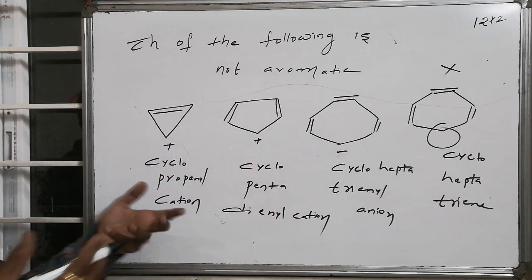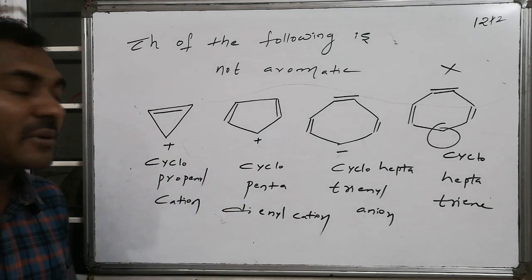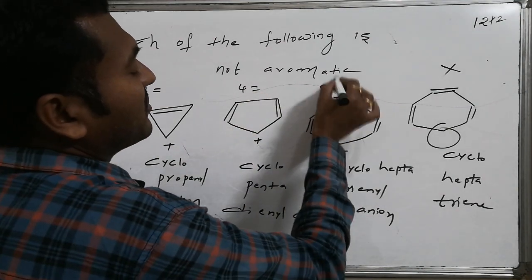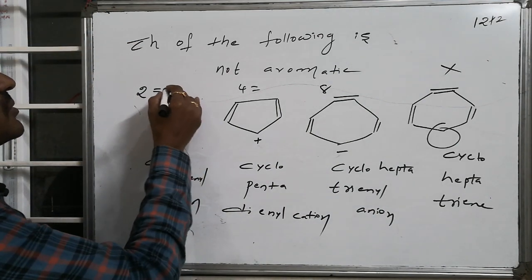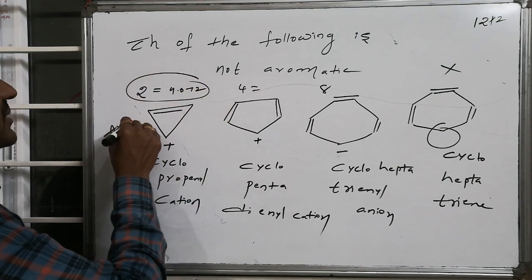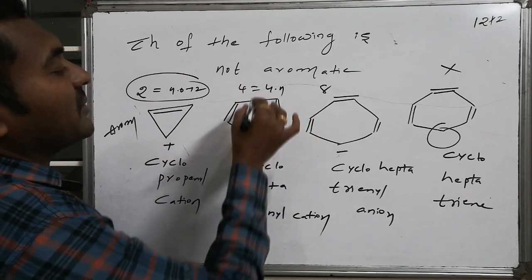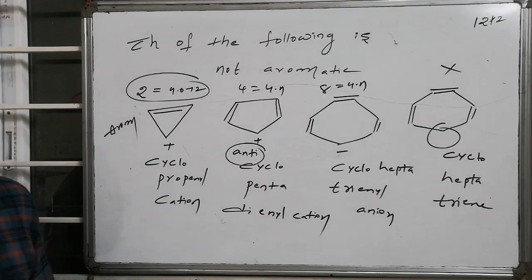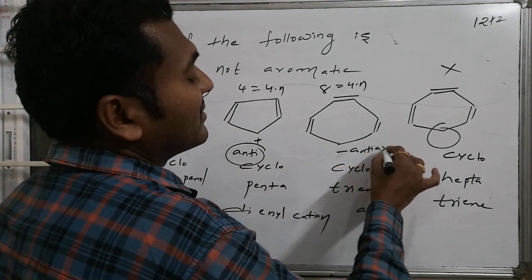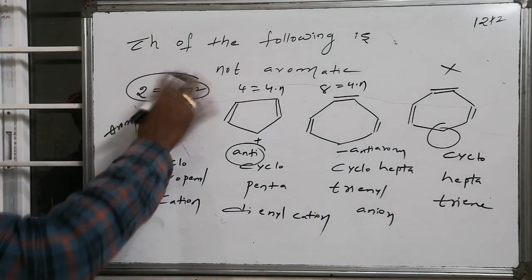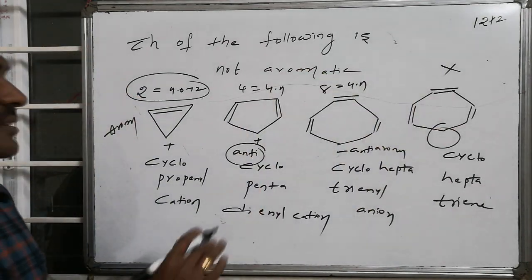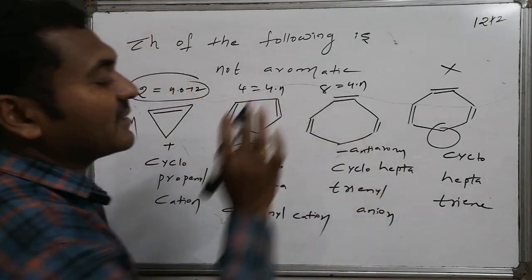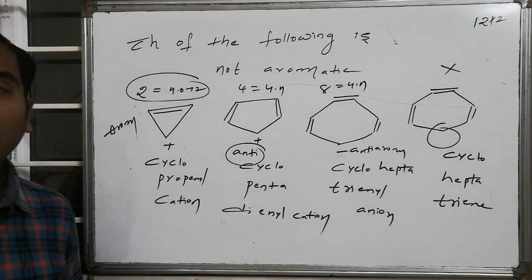The remaining three compounds maintain planarity. Counting pi electrons: cyclopropenyl cation has 2 electrons (4×0 + 2), satisfying Hückel's rule — aromatic. Cyclopentadienyl cation has 4 electrons, which is a multiple of 4n — anti-aromatic. Cycloheptatrienyl anion has 8 electrons, also a 4n multiple — anti-aromatic. Out of the four compounds, only one is aromatic; cyclopropenyl cation is aromatic, while the cations and anions of cyclopentadienyl and cycloheptatrienyl are non-aromatic.